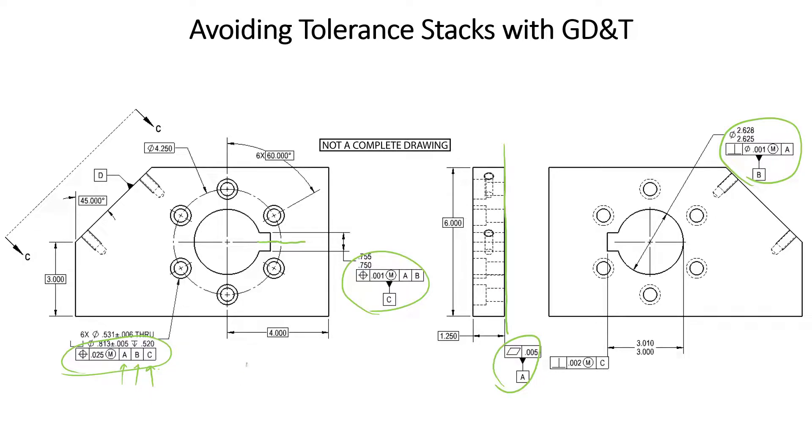We know that datum feature A is a plane and will lock down three degrees of freedom, two rotations and one translation. Datum feature B as a cylinder will then only lock down two translations. And finally, datum feature C will lock down that third degree of rotation.